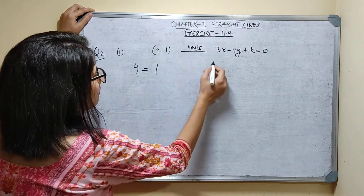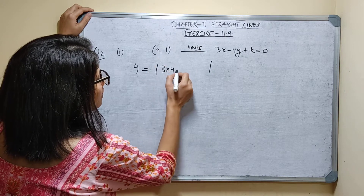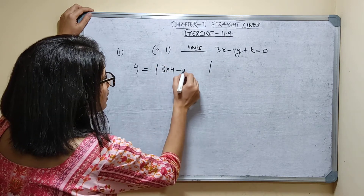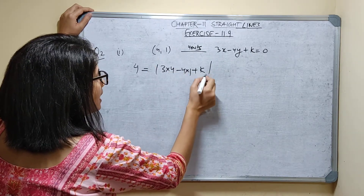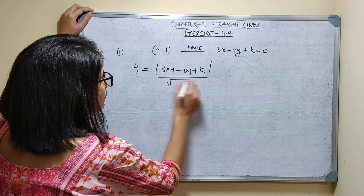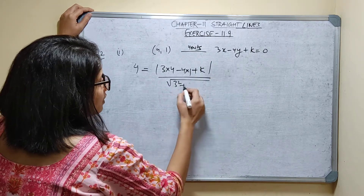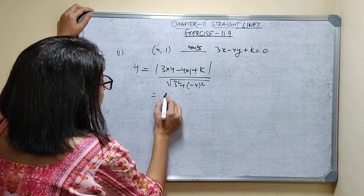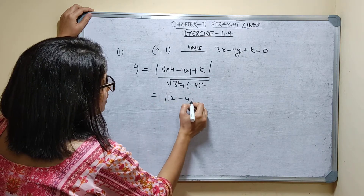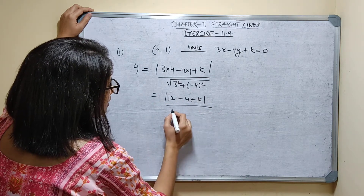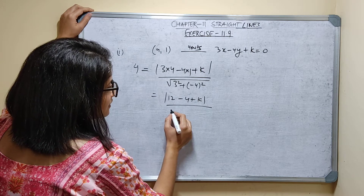It is given: mod of 3 into x₁ — that is 4 — minus 4 into y₁ — substituting 1 — plus k, upon root of 3 squared plus b — that is minus 4. So: 12 minus 4 plus k upon 3 squared, which is 9, plus 16, equals 25.